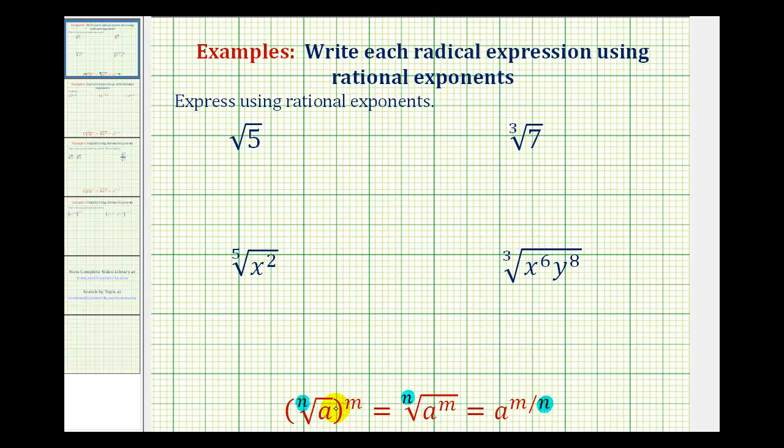And then the exponent in radical form, which can be outside the radical or underneath the radical, which will be the numerator of the rational exponent.